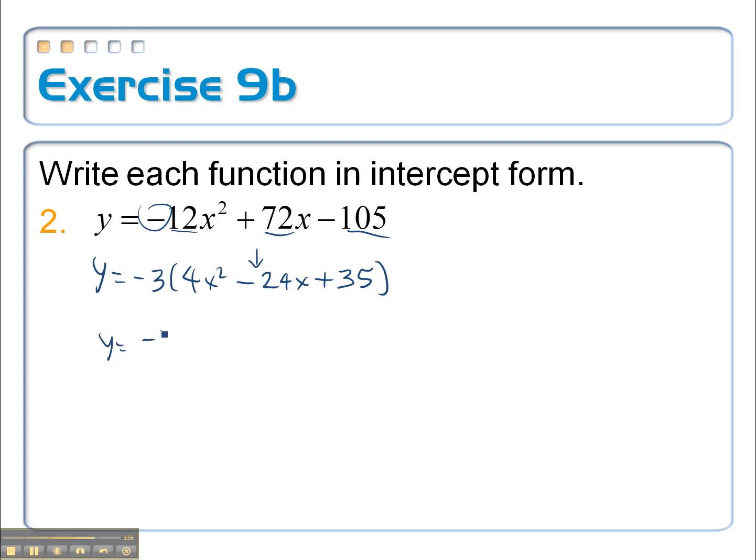So again I'm going to factor this trinomial. Y equals negative 3, let's guess and check here. So for our two front spots they have to multiply up to 4x squared. Let's try 2x and 2x this time.